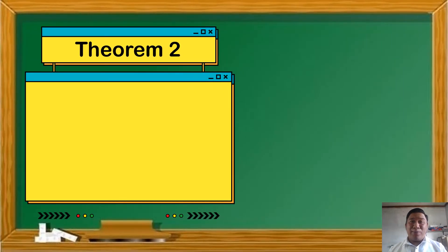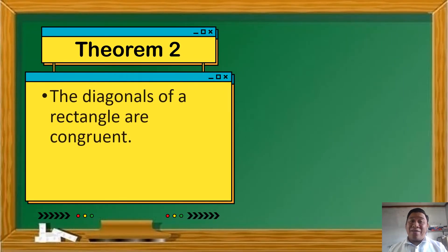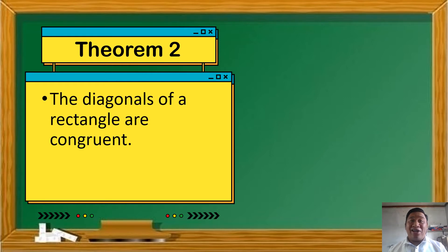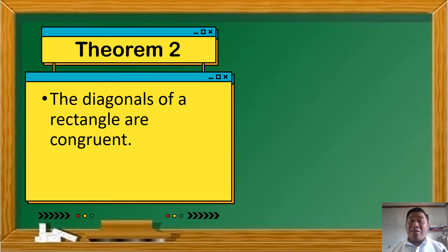Theorem number 2: the diagonals of a rectangle are congruent. Ibig sabihin, yung diagonals daw ng rectangle ay congruent — pag sinabing congruent, equal ang measure. At pag sinabi naman natin diagonals, these are the segments joining two non-consecutive vertices of a polygon.